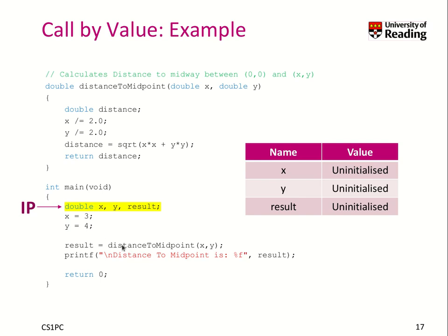Let's say we want to call the distanceToMidpoint function with x and y from main. At this location here, when we try to process this code with our instruction pointer, we would not know anything about the values of x, y, and result. But on our main activation record, the compiler has created three memory locations: one for x, one for y, and one for result. The values are uninitialized. After we've processed x equals 3 and y equals 4, the memory cells have been assigned with the appropriate values. Result is still uninitialized because we assign it later.